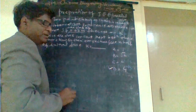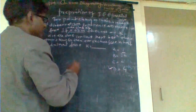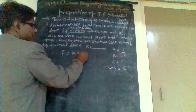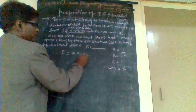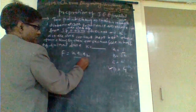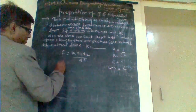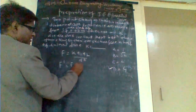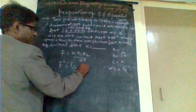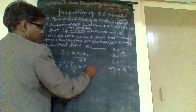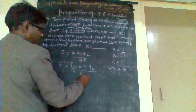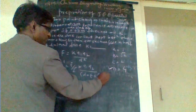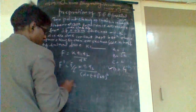We need to find the value of k. We know that F is equal to k·q1·q2 upon d squared, and F dash is equal to k·q1·q2 upon (d minus t plus root k into t) whole squared.